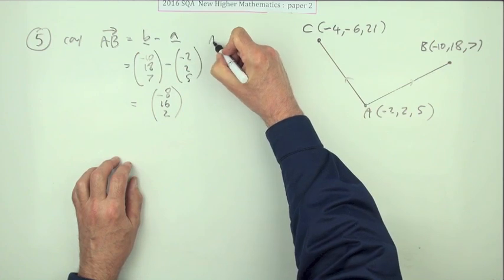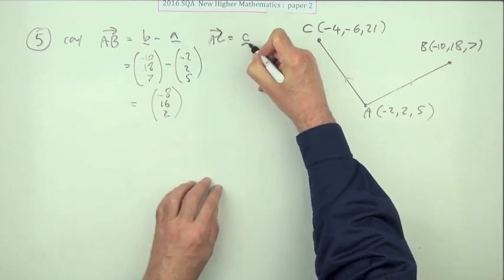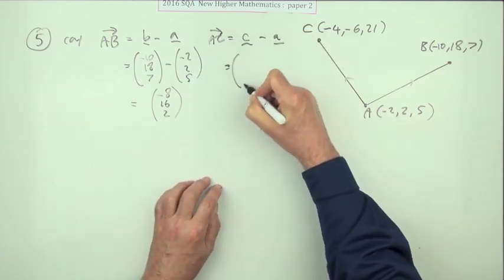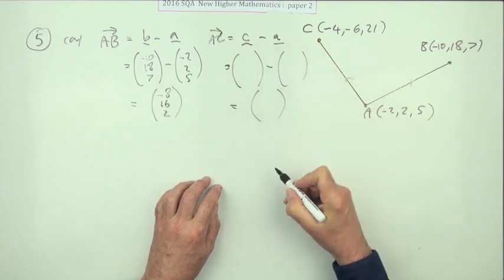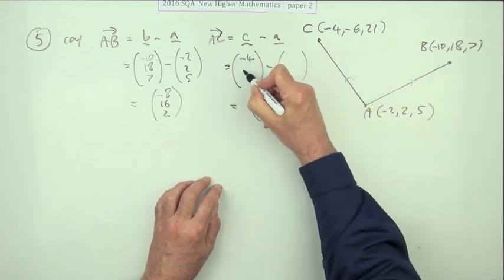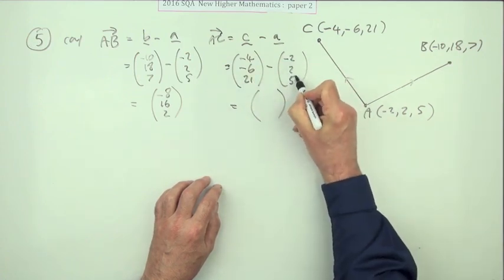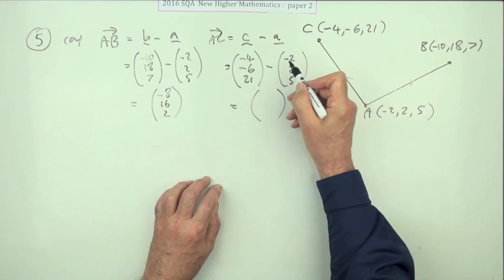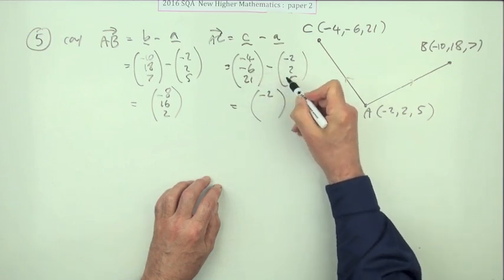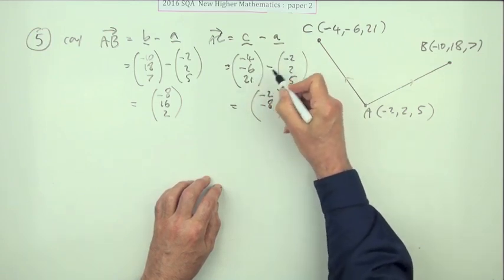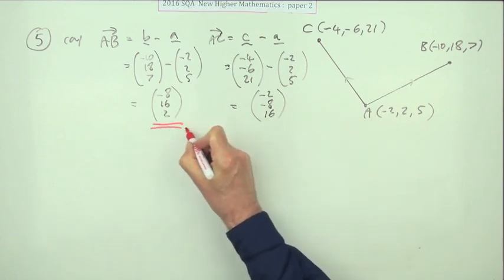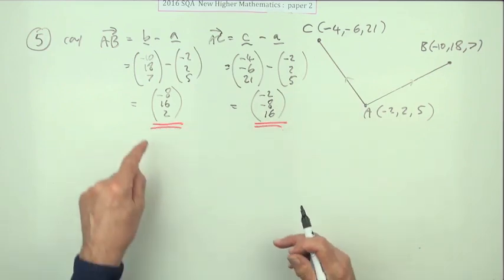Same with AC, that'll be c minus a, spell it out. So c is negative 4, negative 6, 21, and a is again negative 2, 2, 5. So negative 4 plus 2 is negative 2, negative 6 minus 2 is negative 8, and 21 take away 5 is 16.